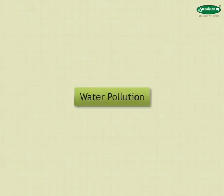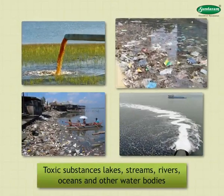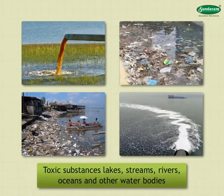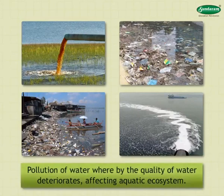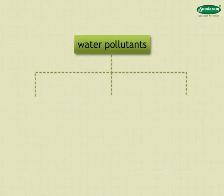Water Pollution: When toxic substances enter lakes, streams, rivers, oceans and other water bodies, they get dissolved or lie suspended in water or get deposited on the bed. This results in the pollution of water whereby the quality of water deteriorates, affecting the aquatic ecosystem. There are three types of water pollutants: Biological, Inorganic, and Organic.